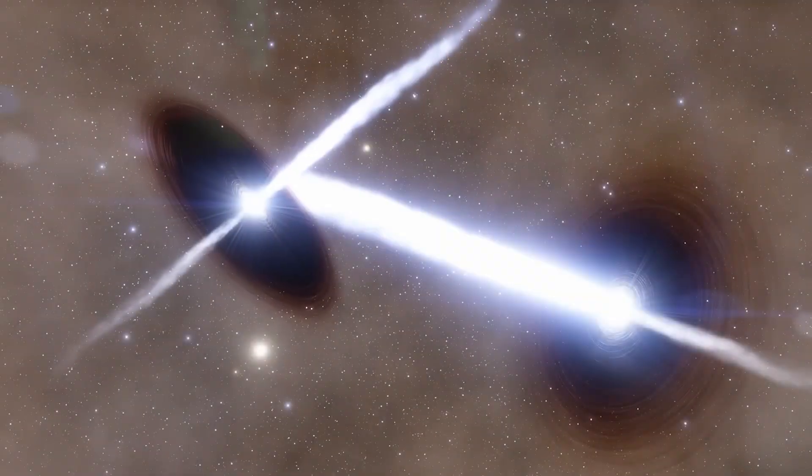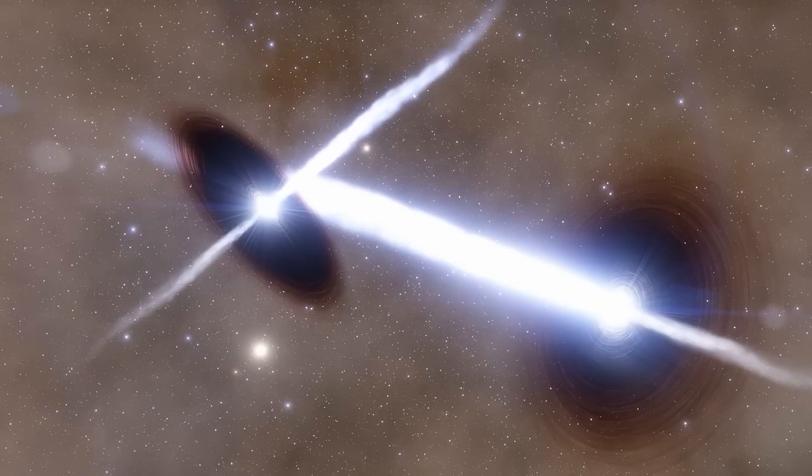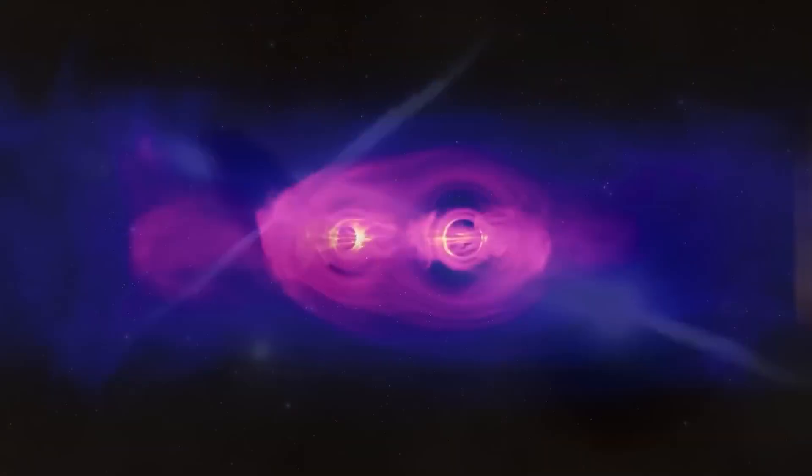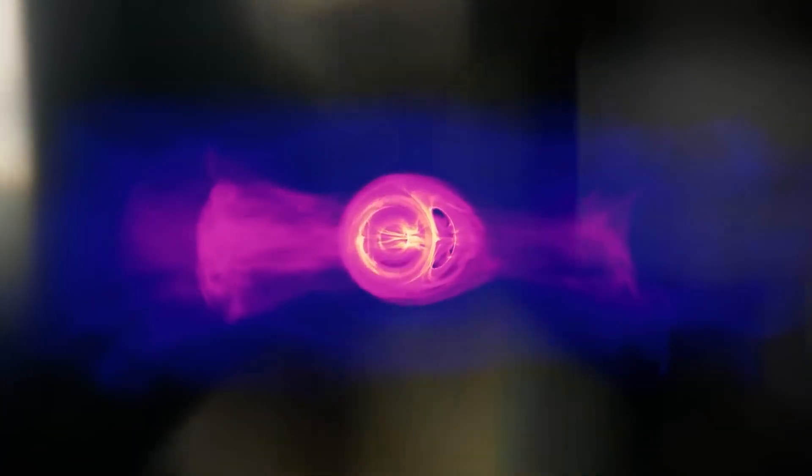It's as if the universe hit fast forward when we weren't looking. And then there's the black hole. Oh, this one's a doozy. At the center of one of these ancient galaxies, Webb spotted a supermassive black hole, weighing in at over a billion times the mass of our sun. Let that sink in. A billion suns.